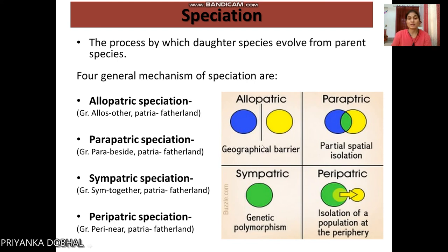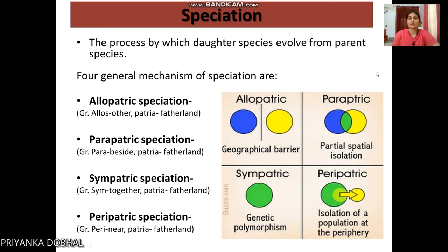These become two different species. In allopatric speciation, many species can improve separately, and if those allopatric species come together and interbreed, they form new populations. This partial isolation is also called parapatric speciation.